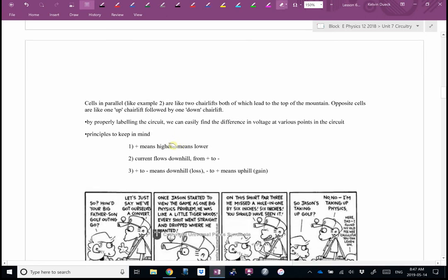So, by properly, an opposite cells are like one up chairlift followed by one down chairlift. So, as long as you label the circuit by figuring out which way is downhill, then if you're going from positive to negative, that means lower. Current flows downhill from positive to negative. Positive to negative means a downhill loss. If you suddenly end up going backwards through a resistor for some reason, that means you somehow skied up the hill and you gained some voltage. And, again, my ski hill analogy breaks down, okay, let's pretend you're using your poles to push yourself up the hill or whatever.